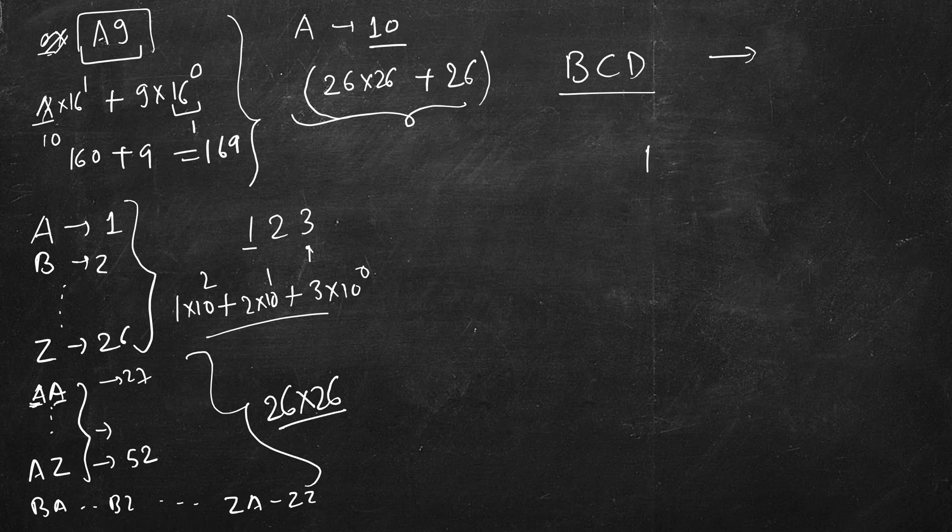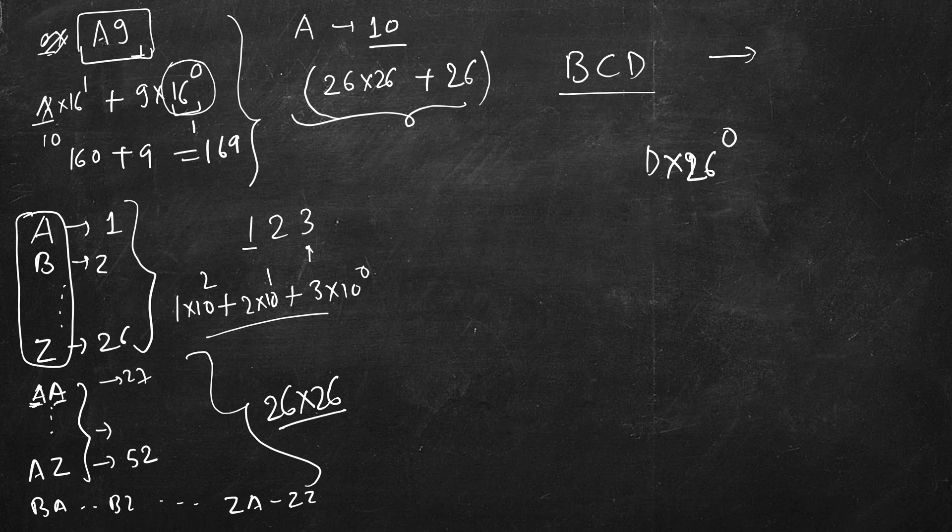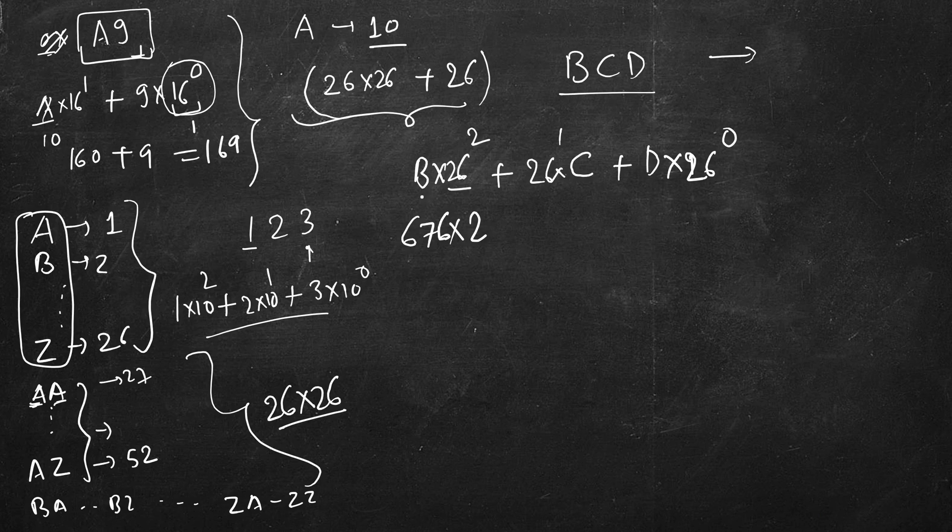Here also: D multiplied by 26 raised to the power 0 - whatever is the base. In hexadecimal we had 16 different digits, in decimal we had 10 different digits, in our case Excel sheet we have 26 different characters. So D multiplied by 26 raised to the power 0, plus C multiplied by 26 raised to the power 1, plus B multiplied by 26 square.